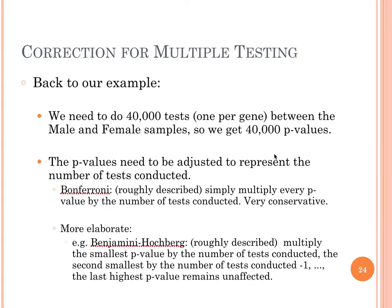To correct for multiple testing, there are different methods. In our example with 40,000 tests — comparing male versus female samples, one test per gene — we get 40,000 p-values. A very stringent method is the Bonferroni correction, where you multiply every single p-value by the total number of tests conducted. In our example, each gene's p-value is multiplied by 40,000. This is a very conservative approach.